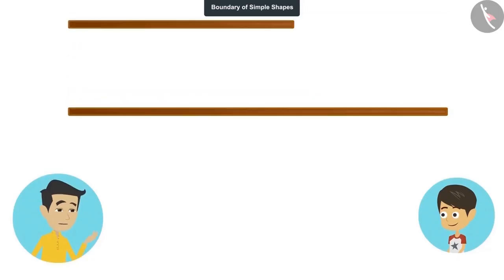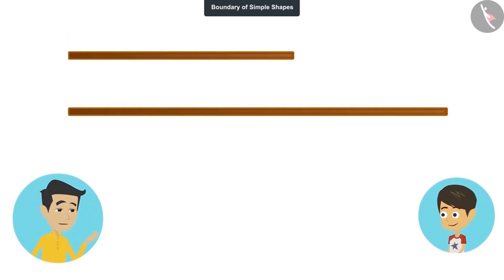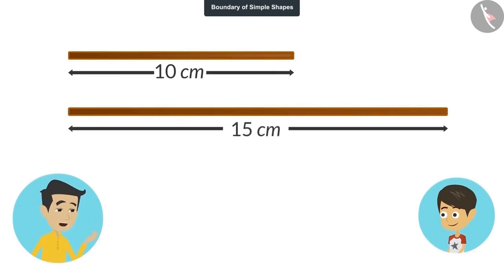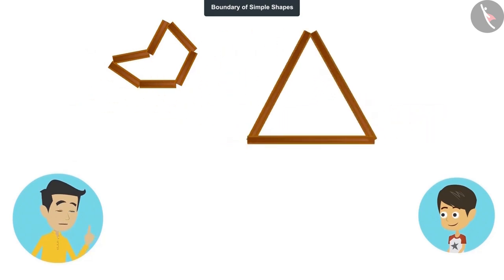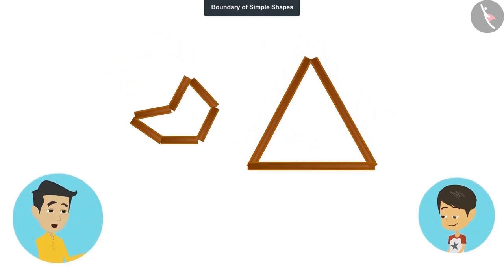See, let's take two thin sticks of different sizes. The short stick is 10 centimeters long and the long one is 15 centimeter long. Now let's cut the short stick into six pieces and make a shape. And now cut the long stick into three pieces and make another shape. Now tell, which of these two boundaries is longer?